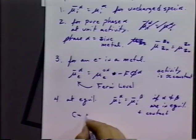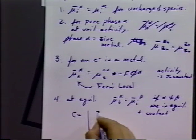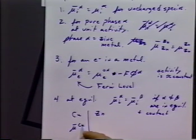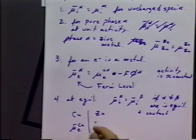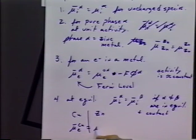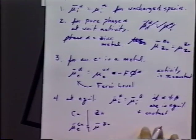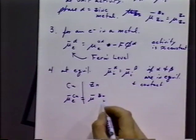As an example, for copper and zinc, the electrochemical potential of the electrons in the copper would have to be equal to the electrochemical potential of the electrons in the zinc.